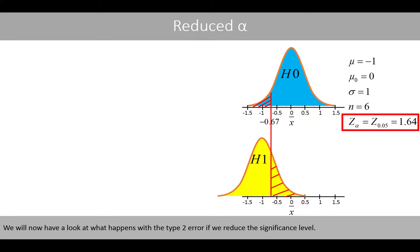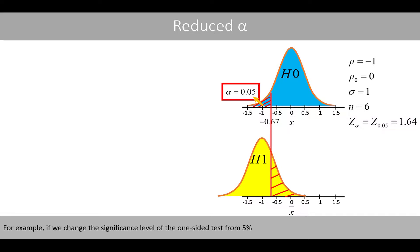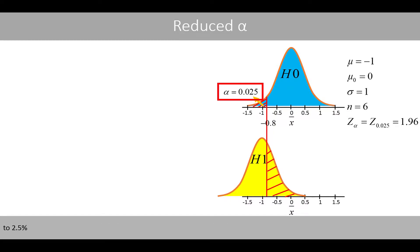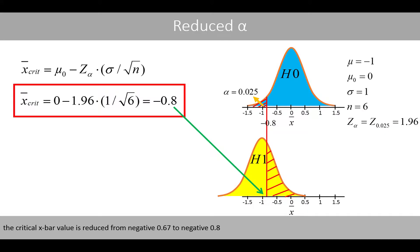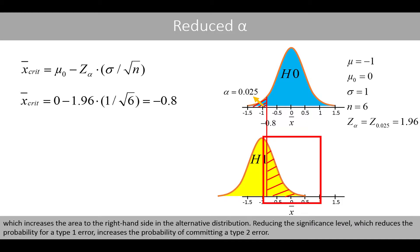We will now have a look at what happens with the type 2 error if we reduce the significance level. For example, if we change the significance level of the one-sided test from 5% to 2.5%, the critical line will move a bit to the left. Since the critical z-score value is now 1.96 instead of 1.64, the critical x-bar value is reduced from negative 0.67 to negative 0.8, which increases the area to the right-hand side in the alternative distribution. Reducing the significance level, which reduces the probability for a type 1 error, increases the probability of committing a type 2 error.